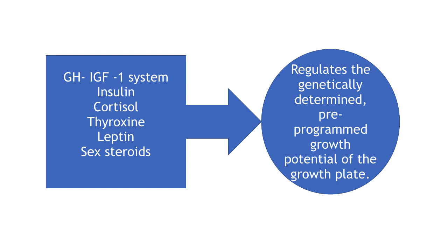This slide shows the effect of various hormonal factors such as growth hormone, the insulin-like growth factor 1 system, insulin, cortisol, thyroxine, leptin, and sex steroids. These regulate the genetically determined, pre-programmed growth potential of the growth plate of the baby.